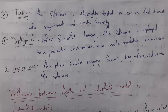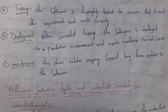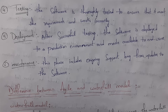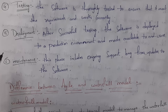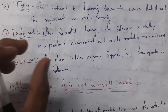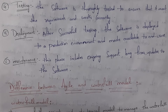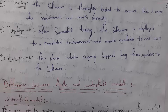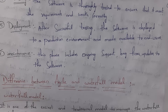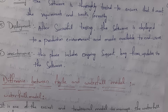The fourth phase is testing. Software testers take code from developers and test whether the code is working correctly or not. The fifth phase is deployment — once testing is successfully completed, the deployment engineer places the software on a server so all users can access it. The last phase is maintenance — even after releasing the software, we need to provide support: fixing any bugs and providing updates.